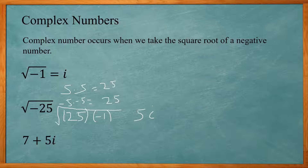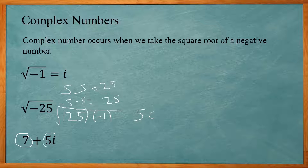A complex number consists of a real part and an imaginary part. The real part would be the 7 and the imaginary part the 5i.